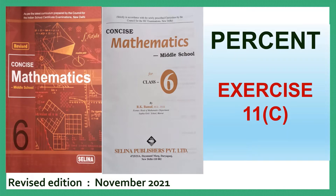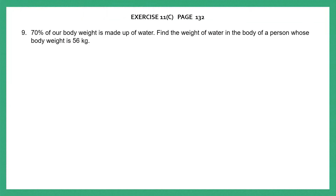Hello students, let's do percent exercise 11c. We are continuing from question 9. 70% of our body weight is made up of water. Find the weight of water in the body of a person whose body weight is 56 kg.